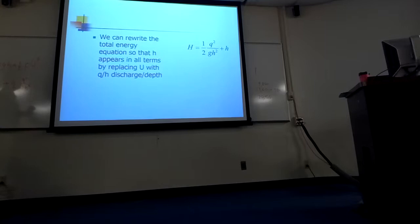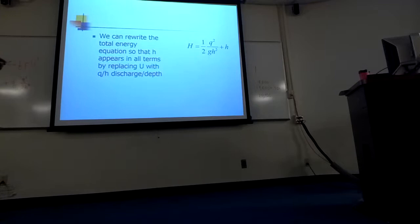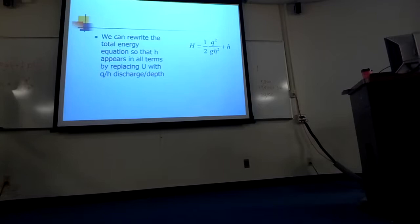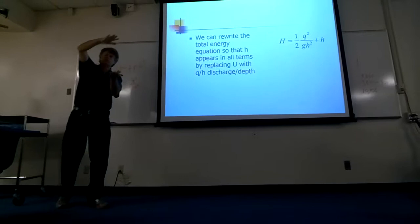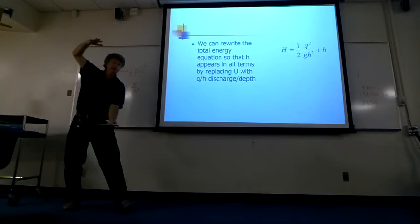Small q squared over h squared. So, all we did was we took u and replaced it with q over h. And where q is for each meter of the stream, from top to bottom, how much water goes downstream. So, in one cubic meter, we have, that's the velocity. And if I do the whole stream, that's the total amount of water. And to get back to velocity, I just divide by the depth.